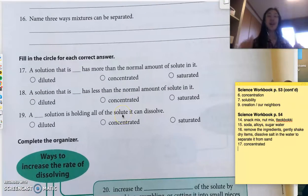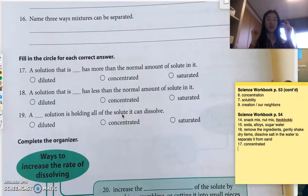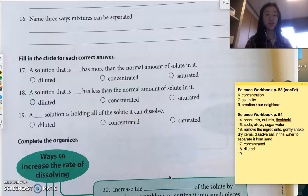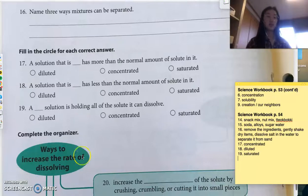So, 18, a solution that is blank has less than the normal amount. Diluted, you got it. Number 19, a blank solution is holding all of the solute that it can possibly dissolve. Saturated. Fantastic. We're doing great.